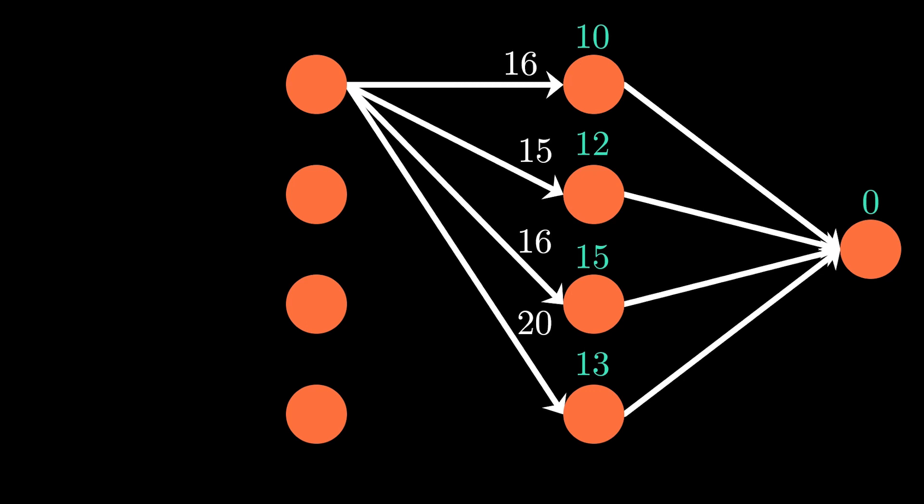So for example, if you were to follow the top path, it will take you 16 minutes to travel between the nodes, and we know that it will take an additional 10 minutes to go from the node that we will be arriving at to the final destination. So the total trip length for this particular path would be 26 minutes.